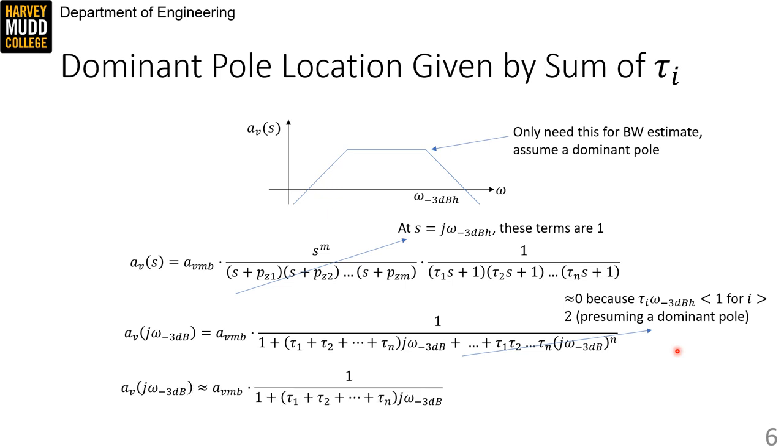So that leaves us with an interesting first order approximation for this many pole system in the region that it starts rolling off, which is the interesting one for bandwidth estimation. And using this approximation only relies on us making sure we're looking at high frequencies, and that one pole is dominant.